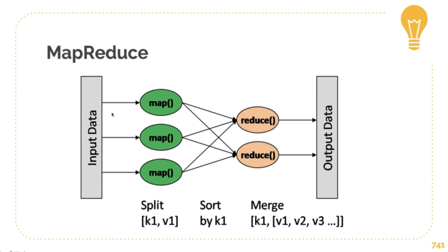Here's a quick example of how it looks. You can see the input data here, the mapping phase sends it out to different computers, and then when we get the results back we can reduce everything by just merging all of the answers together.